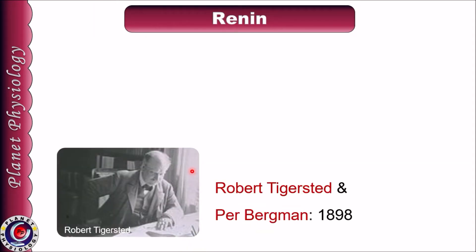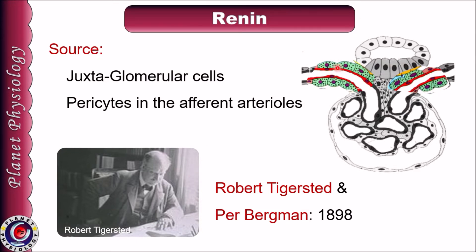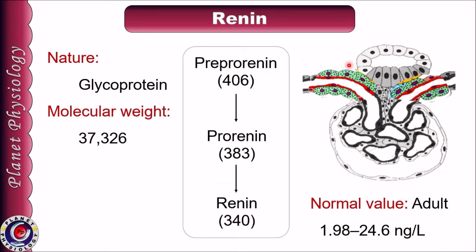Renin was discovered by Robert Tigerstedt and his student Perl Bergman in 1898. Renin is mainly secreted by JG cells of the kidney. A small amount of renin is also secreted from pericytes of afferent arterioles and locally in various tissues, but this amount is negligible, and hence the major source of renin is JG cells. Basically, it is a glycoprotein with 340 amino acids and a molecular weight of about 37,000. It is secreted as a large precursor called pre-prorenin, then split to form prorenin and stored in granules of JG cells, and finally split to form renin just before its secretion.